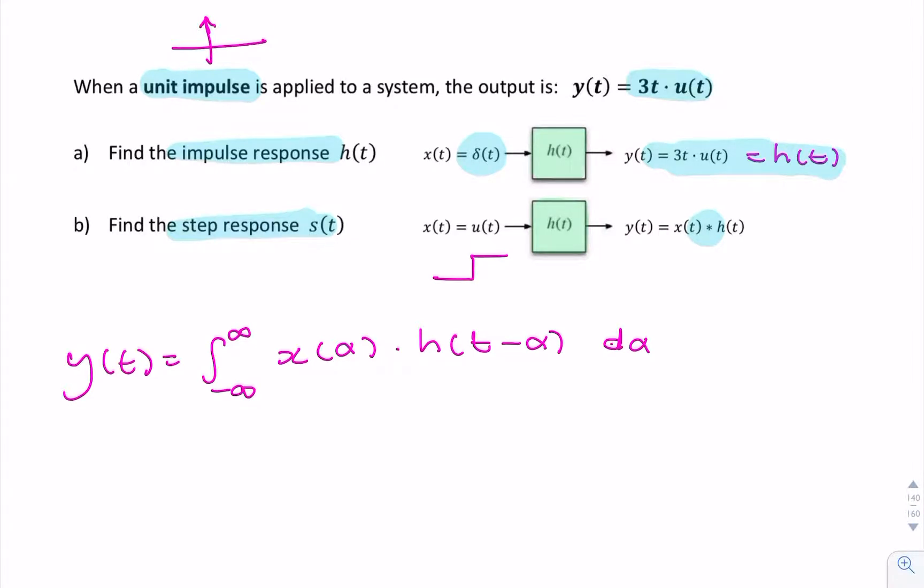Now what we can do is just replace x with the unit step, and replace h(t minus alpha) with the equivalent expression that we found in part A. So I can replace x with a unit step, and I can replace h(t minus alpha) with 3(t minus alpha) u(t minus alpha), d alpha.